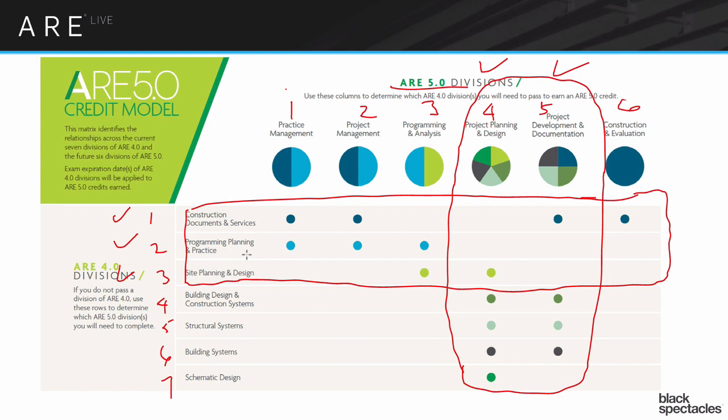But one of the big things is if you are thinking about it or you're starting to get worried about it, be strategic. Here we are, here are the new 5.0s. We have one, two, three, four, five, and six. Here are the existing 4.0 ones. One, two, three, four, five, six, seven. These dots represent the content areas. If you look at this, you very quickly will realize that if you, under 4.0, take those three - construction documents and services, programming, planning, and practice, and site planning and design - there's that whole big bunch of content that you've got taken care of. Very oddly, if you're being strategic about it, you can manage to take a seven exam 4.0 and transition in the middle to a six exam 5.0 by doing one, two, three, four, five exams.